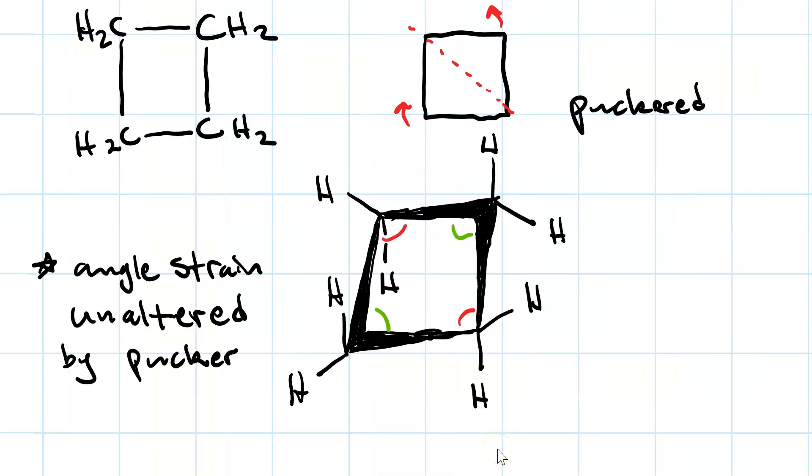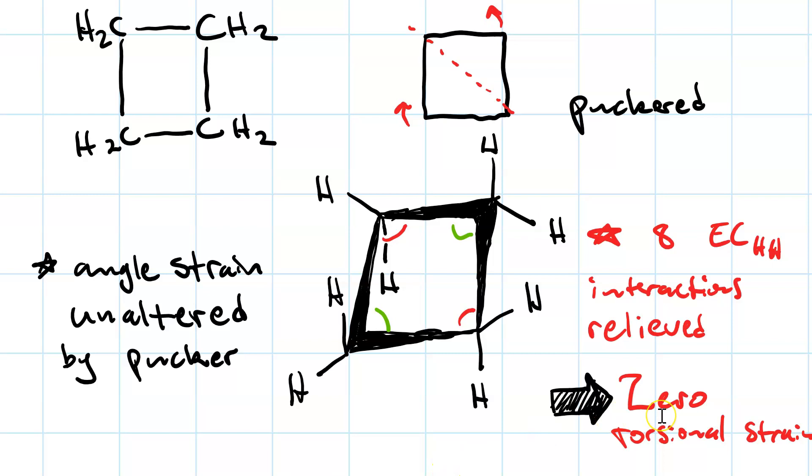The torsional strain, however, is another matter. In the puckered conformation, all eight eclipsing interactions are relieved. So the puckered conformation has zero torsional strain, whereas the planar conformation has lots of torsional strain. Having zero torsional strain means the puckered conformation is preferred for cyclobutane.